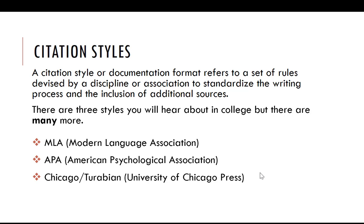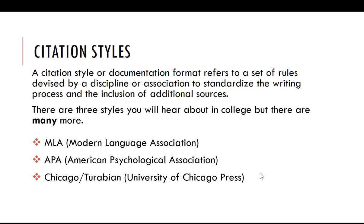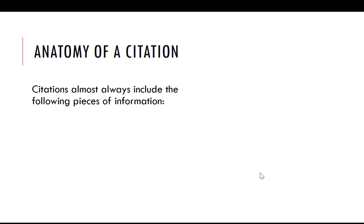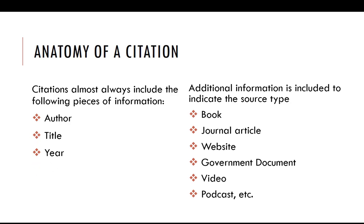Each style organizes and formats information in a citation a little differently. Regardless of those differences, citations almost always include three key pieces of information: the author, the title, and the year. Additional information is included to indicate the type of source being cited. Once you're comfortable with the essentials, it will become easier to recognize differences between a citation for a book versus an article in a journal.